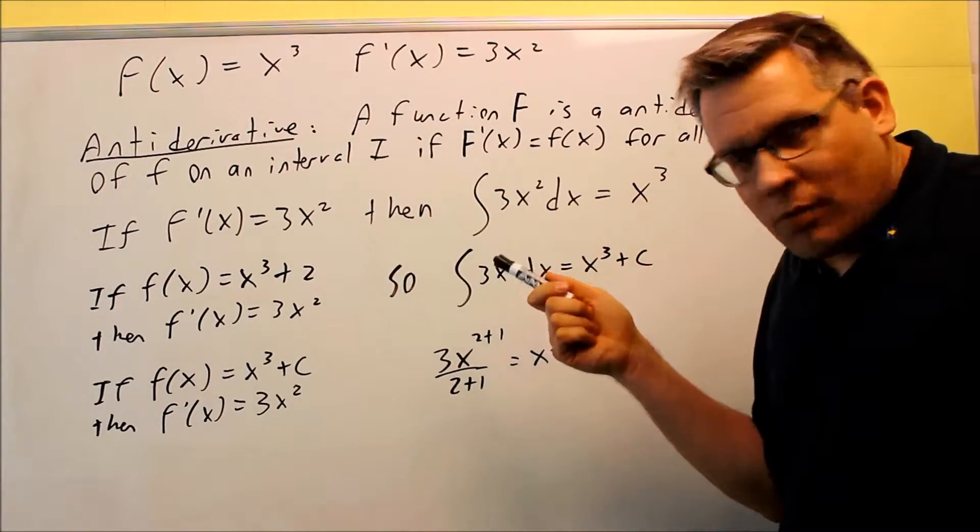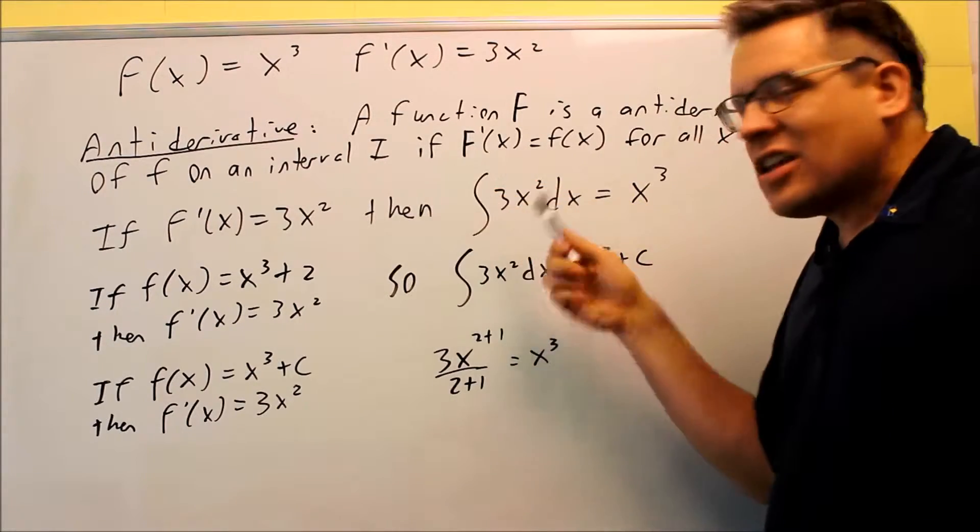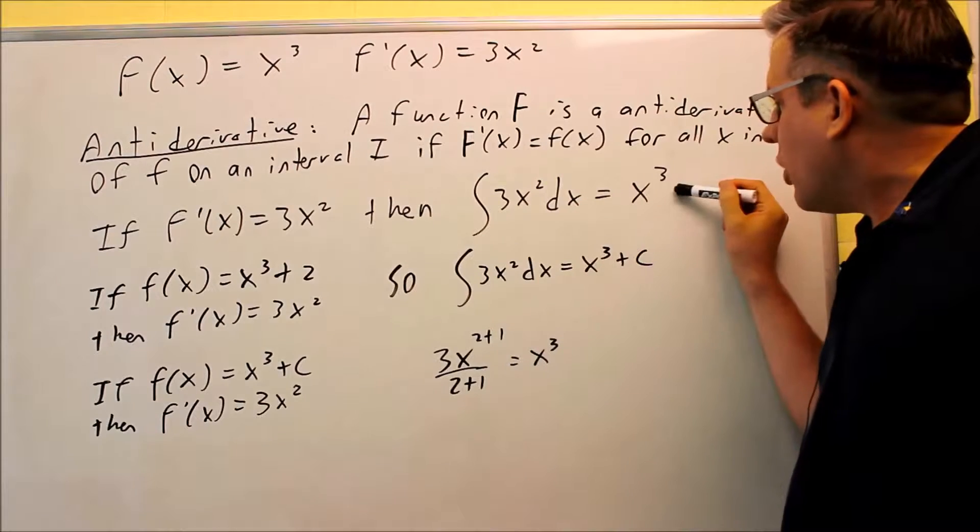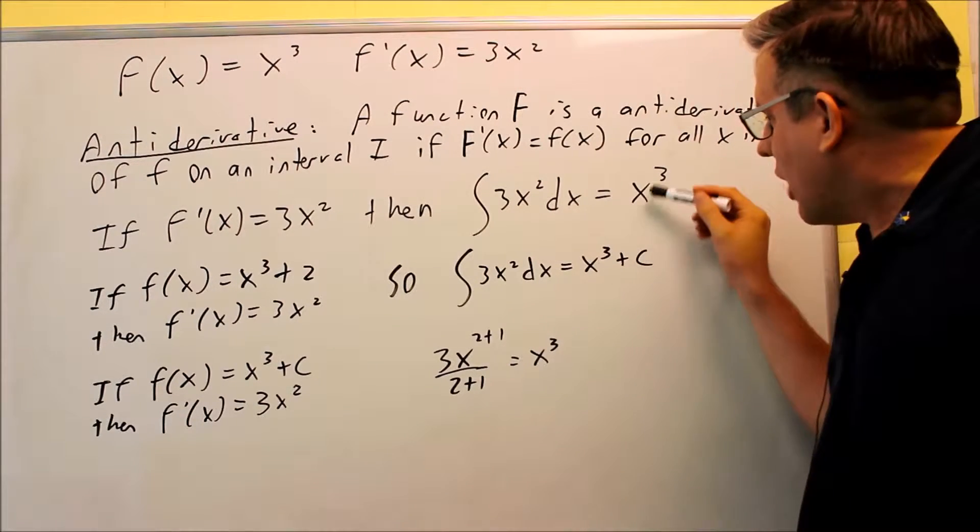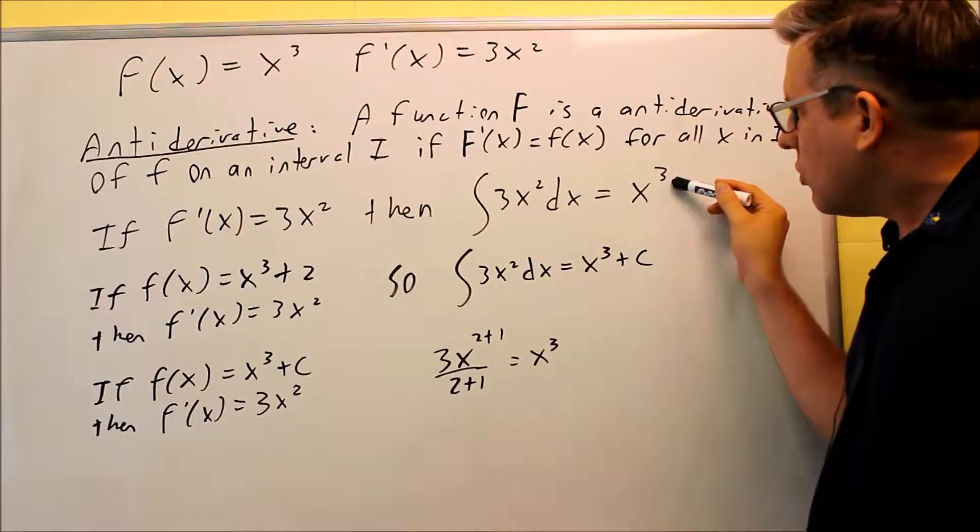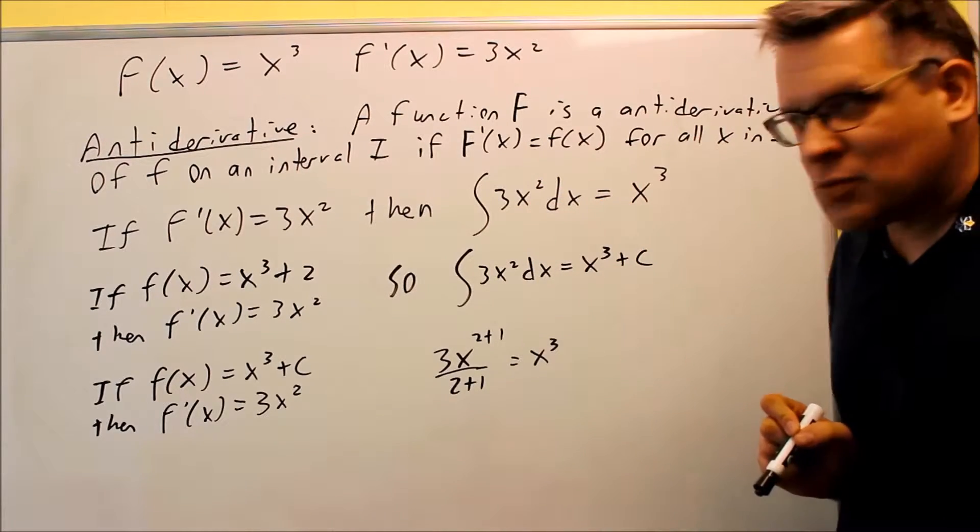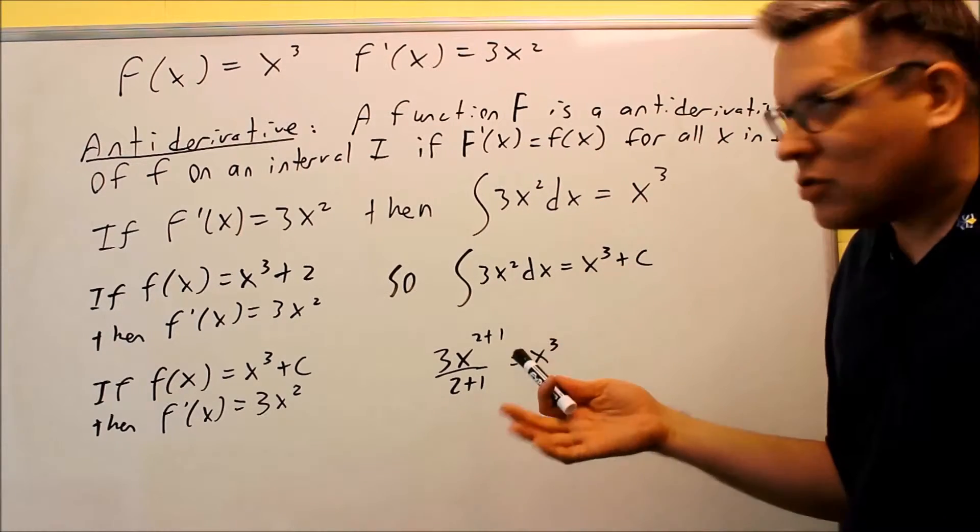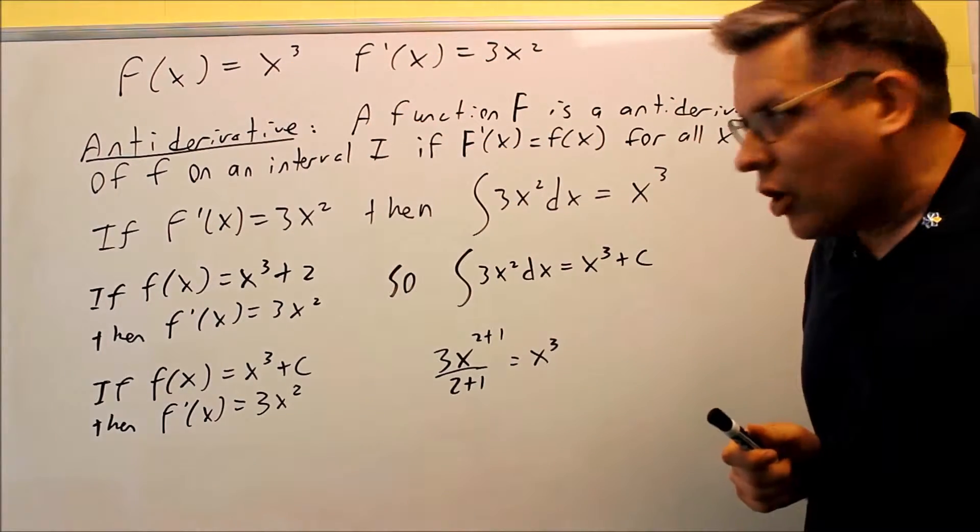If we start with the derivative here and we take the anti-derivative, we get this. Basically, capital letter F is going to be considered an anti-derivative because if I take the derivative of x cubed, I get back to what was originally inside here, which is 3x squared. That's basically how it works. You're going in reverse, starting from this one, going back to the original one.